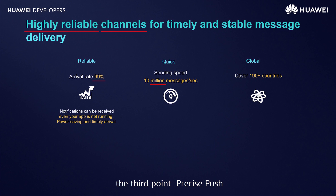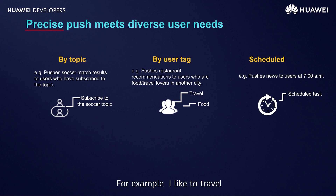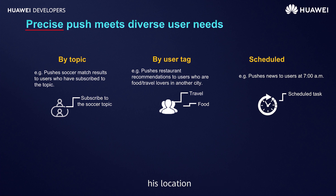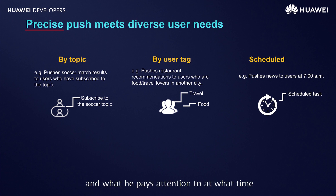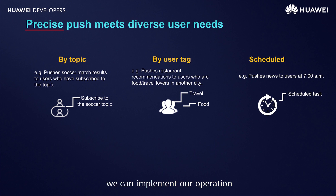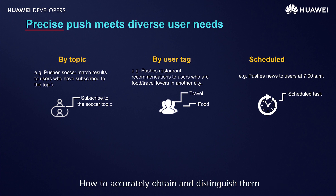The third point: precise push. High speed is only one aspect, and accurate arrival is our strong point. For example, if I like to travel and can collect information I'm interested in every time before I go there, that is a kind of accurate delivery. To achieve this effect, we need to collect the user's concerns, location, the information they focus on most frequently, and what they pay attention to at what time. Only after collecting the data can an accurate portrait be obtained.